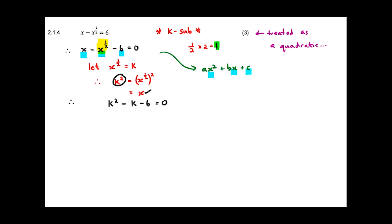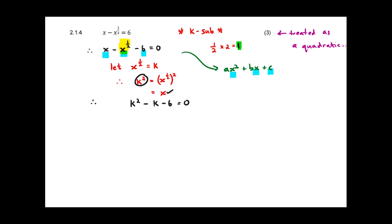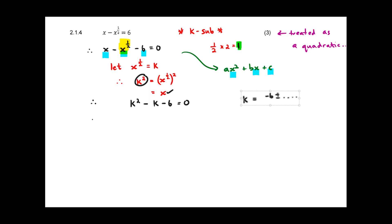That's basically a quadratic equation — we're just using k instead of x. I can factorize it, complete the square, or use the quadratic formula. If using the quadratic formula, keep it in the form k equals. In this case I'm simply going to factorize: it factors as (k minus 3)(k plus 2), giving k equals 3 or k equals negative 2.